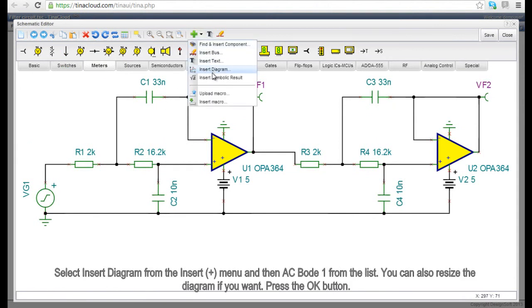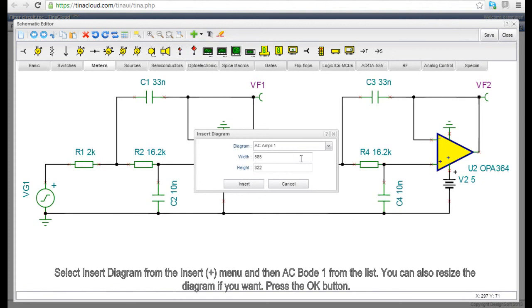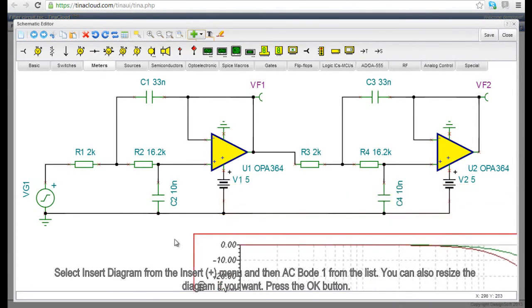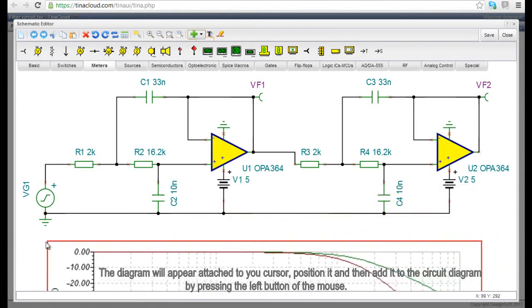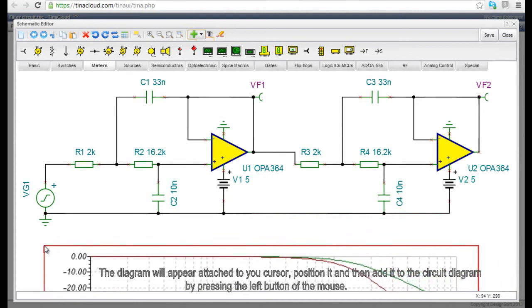Select Insert Diagram from the Insert menu, denoted by a plus symbol, and then select AC Bode 1 from the list. You can also resize the diagram if you want. Press the OK button. The diagram will appear attached to your cursor. Position it and then add it to the circuit diagram by pressing the left button of the mouse.